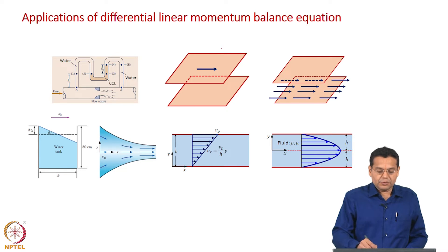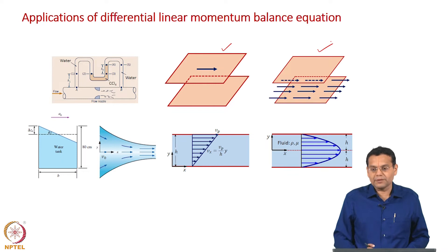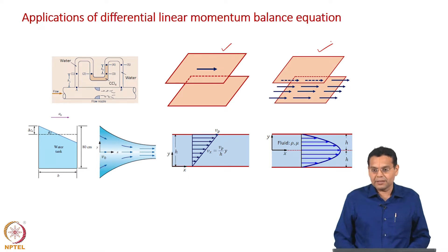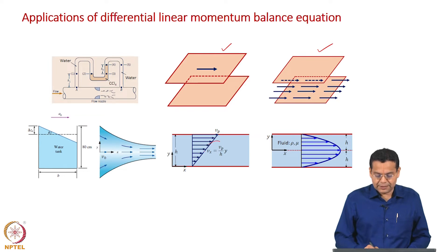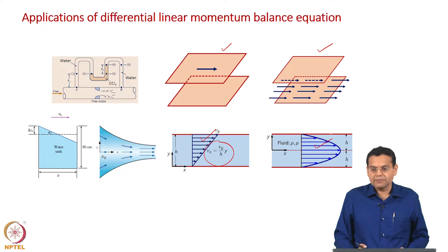More importantly, two configurations: flow between two parallel plates — one in which one plate is fixed and the top plate is moving, and another in which both plates are fixed but flow occurs due to a pump. We have looked at these profiles several times earlier and taken them as given. Now, towards the end of fluid mechanics, we will be deriving these velocity expressions and plotting these profiles for both cases.